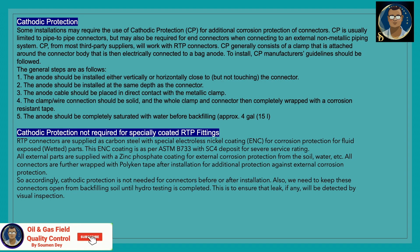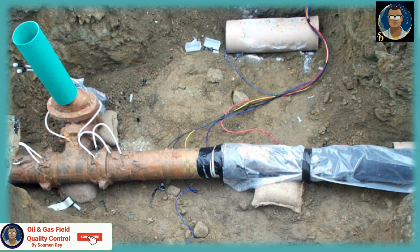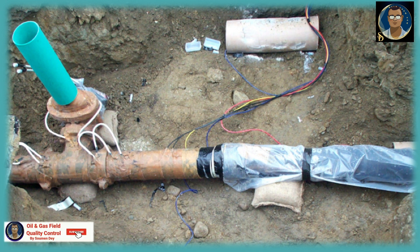Cathodic protection: some installations may require cathodic protection for additional corrosion protection of the metallic connectors in an RTP pipeline. CP is usually limited to pipe-to-pipe connectors but may also be required for end connectors when connecting to an external non-metallic piping system. CP from most third-party suppliers will work with RTP connectors. CP generally consists of a clamp attached around the connector body that is then electrically connected to a bag of anode. To install CP, the manufacturer's guidelines must be followed.